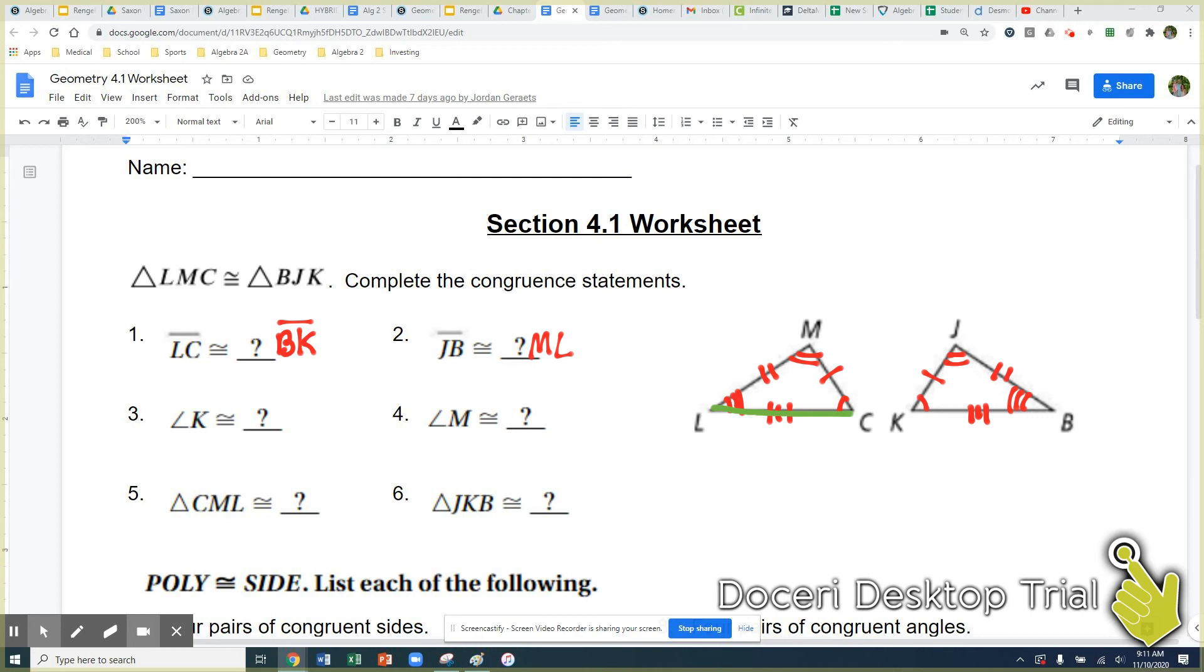J, K, B. I look at that. That's J to K to B. So I'm going middle, last, first. M, C, L. That would be my congruent statement.